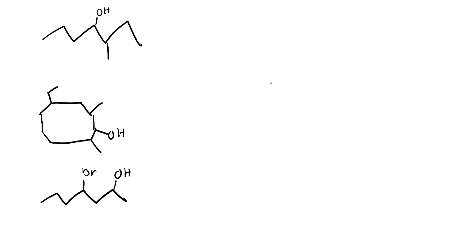We're going to do a lot of practice problems. Whenever you see an alcohol, you're going to start counting nearest to it. So most likely I'm going to start counting 1, 2, 3, 4 from one side, or 1, 2, 3, 4, 5, 6, 7 from the other. Alcohol is going to be on the fourth carbon no matter what direction. If I go from the left, the methyl group would be on the fifth carbon; from the right, the methyl would be on the third carbon.